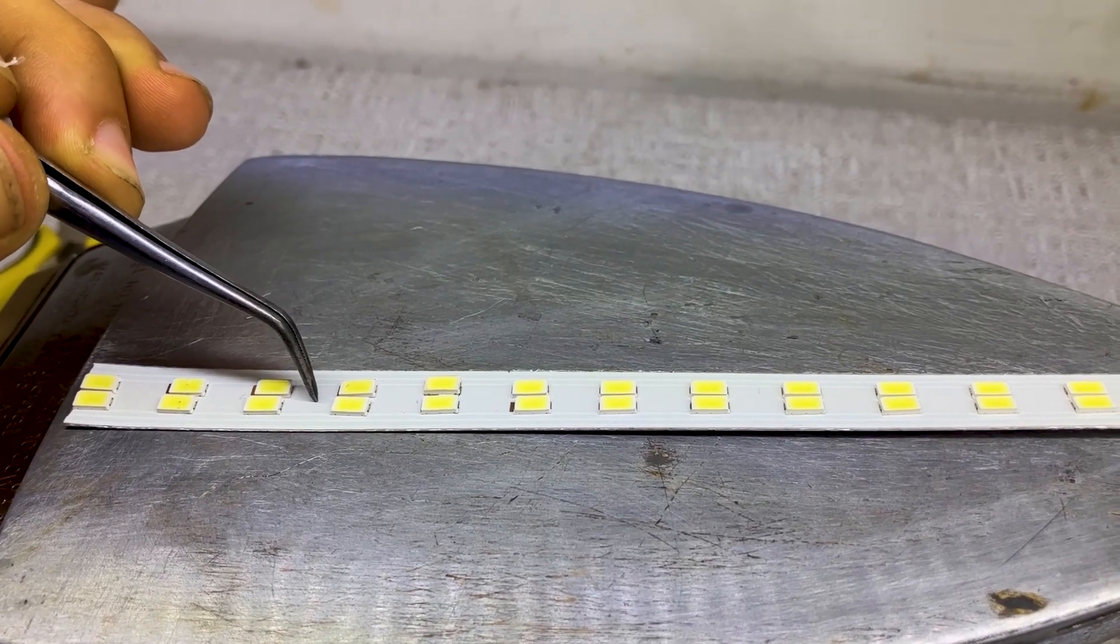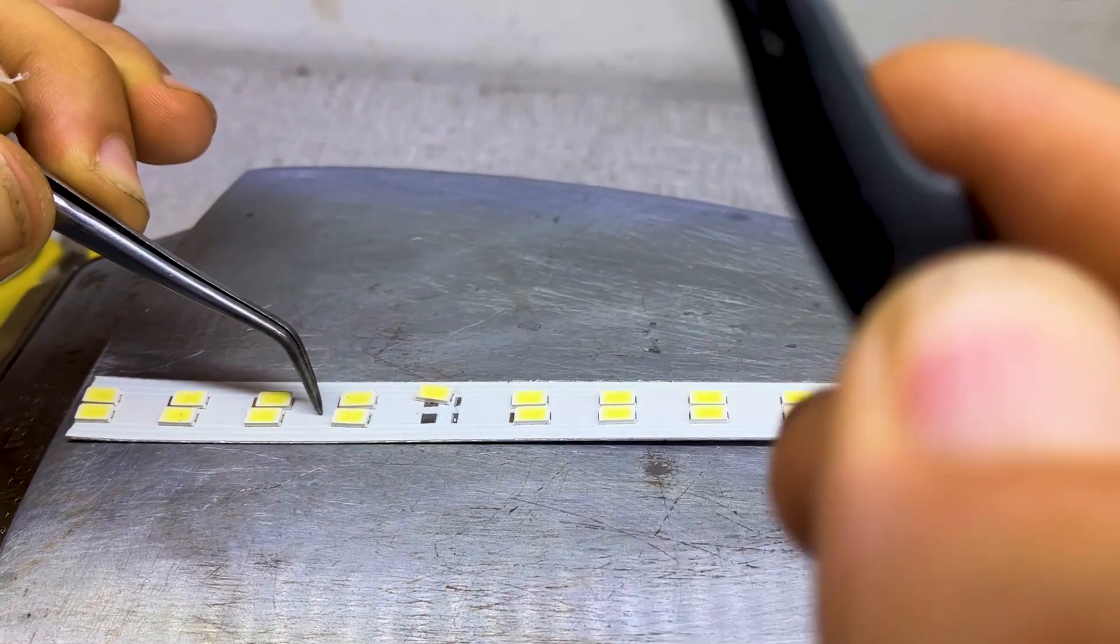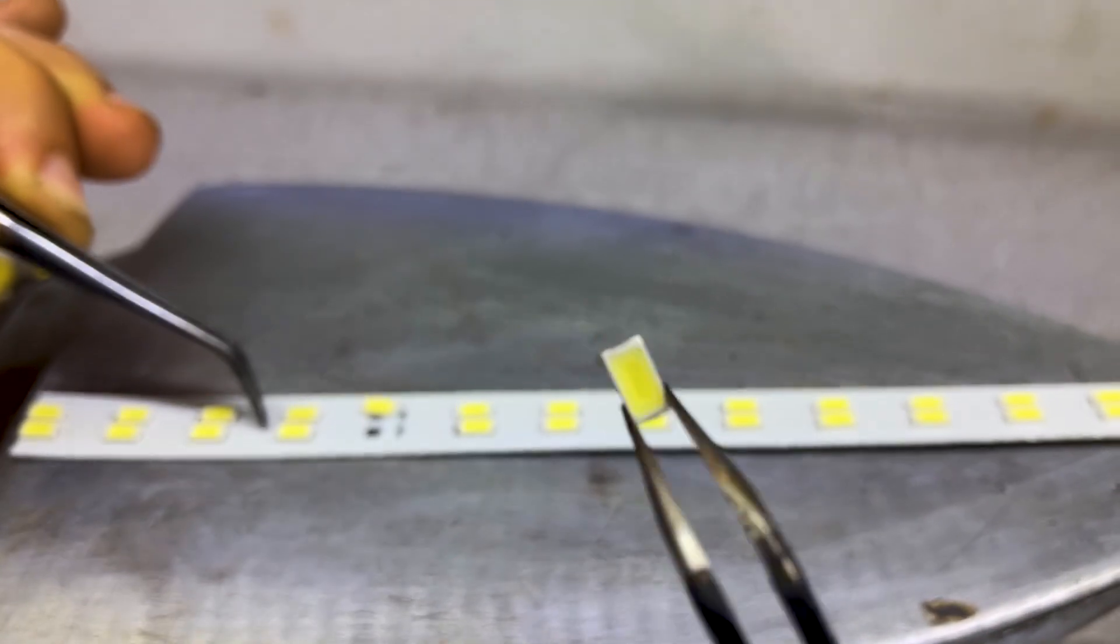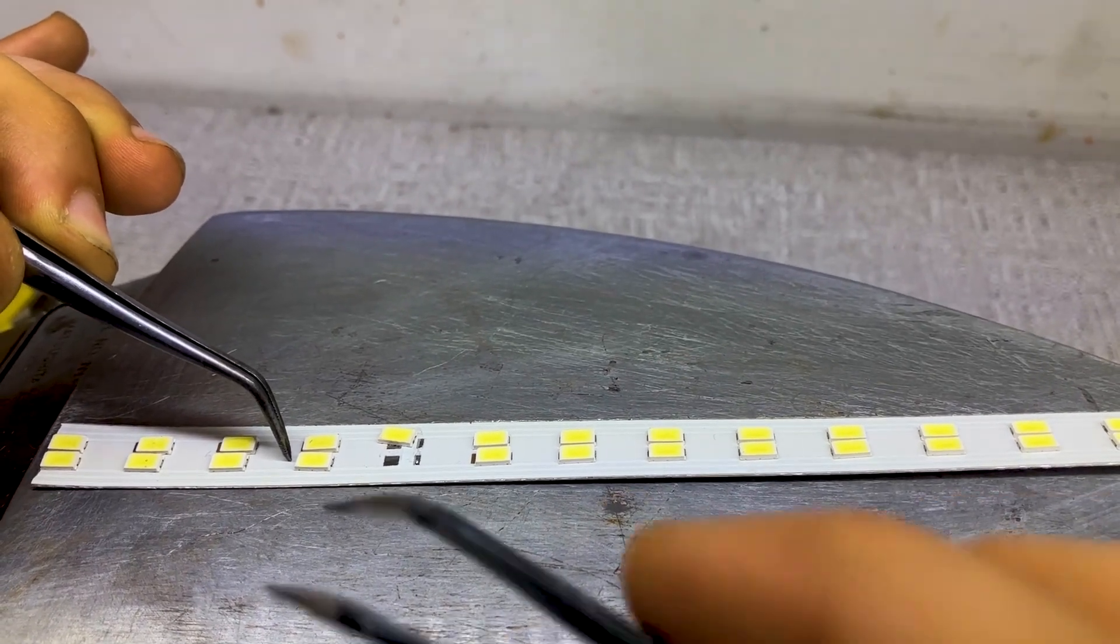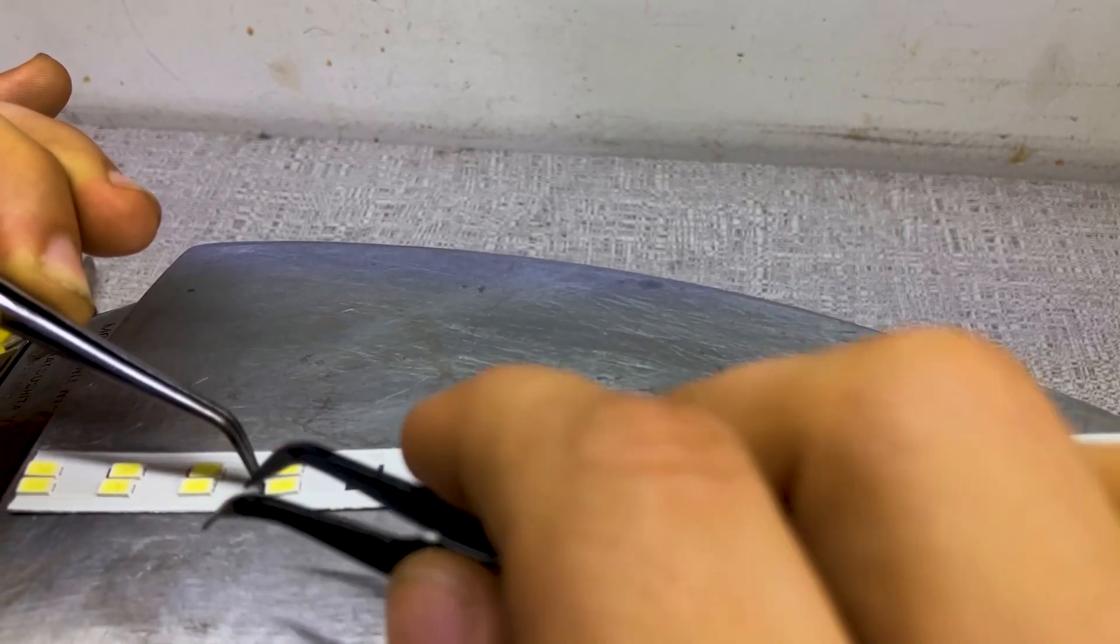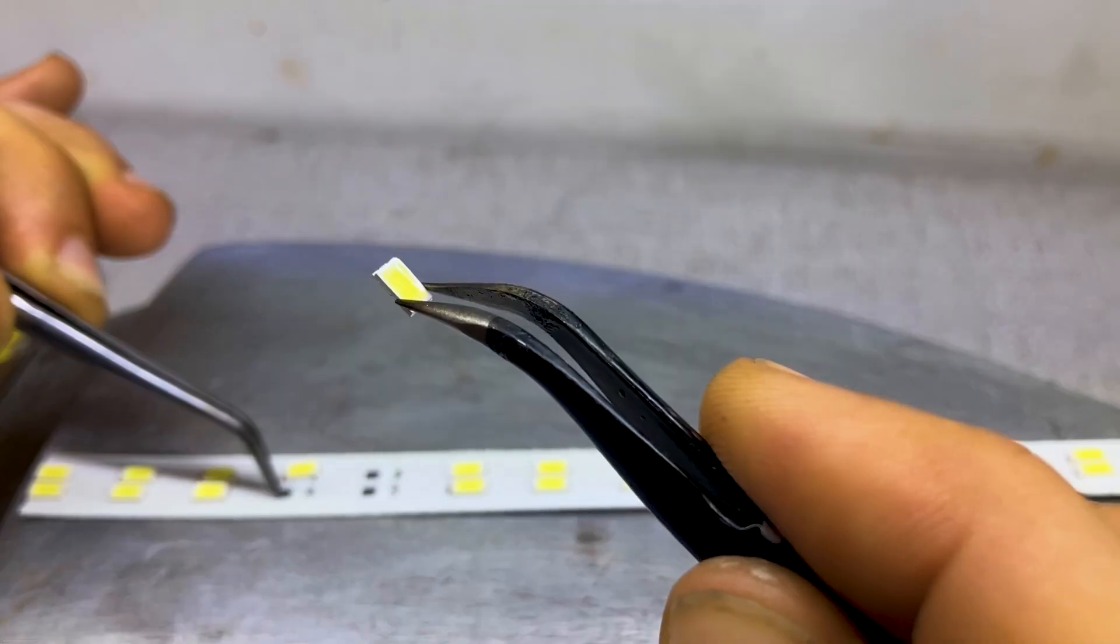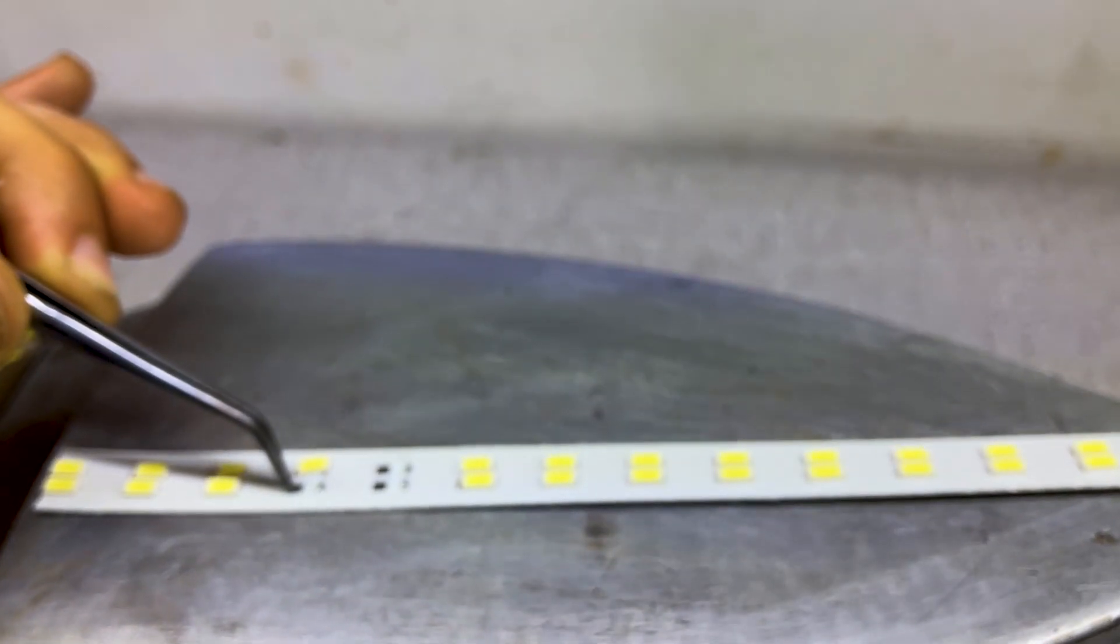Hello everybody, do you know how to desolder and solder LEDs on aluminum PCB? If you don't know, please follow this video until the end. I'll show you how it's possible to solder and change LEDs on an aluminum PCB.